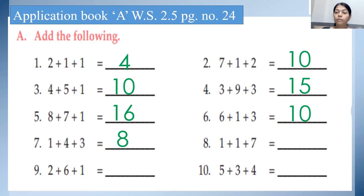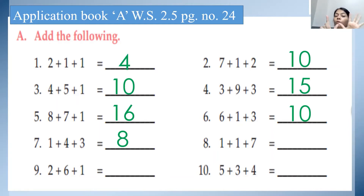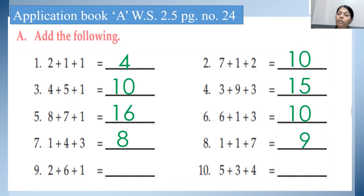See the eighth one: 1 plus 1 plus 7. So 1 in the mind, 1 on the finger. After 1, the next number is 2. So 2 in the mind, 7 on the finger. After 2, count the next number: 3, 4, 5, 6, 7, 8, 9. So the answer is 9.